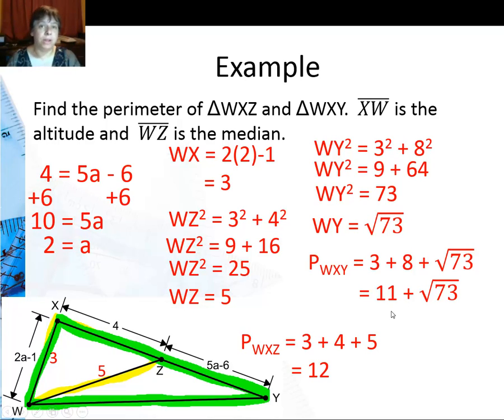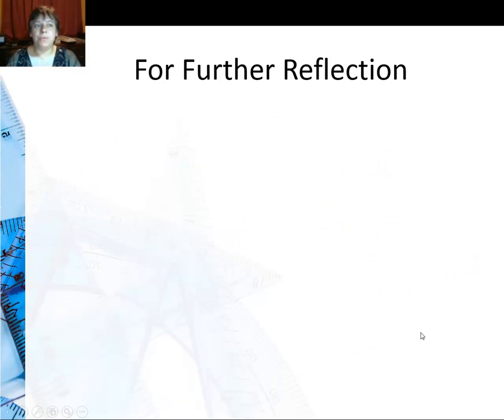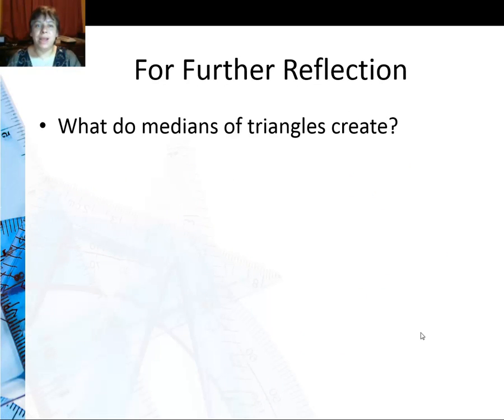It's okay to have a whole number plus a square root as an answer. If I want a decimal I'll tell you to give me a decimal approximation and I'll let you know what place value I want on that. So for further reflection what do medians of triangles create?